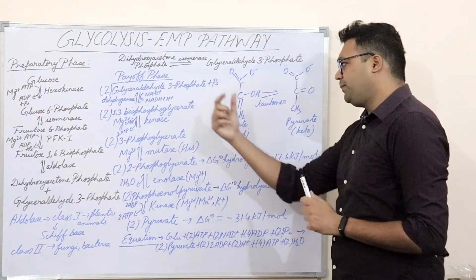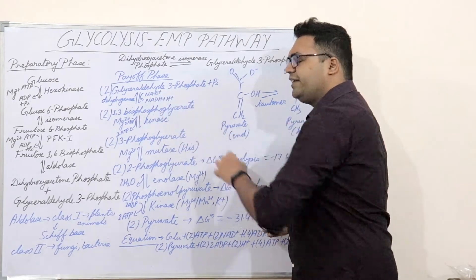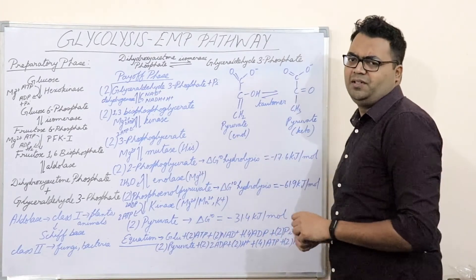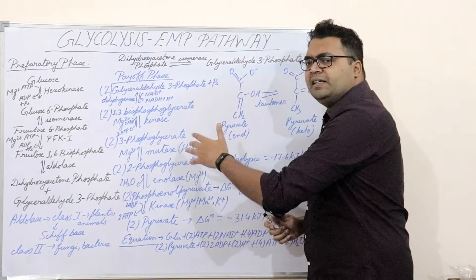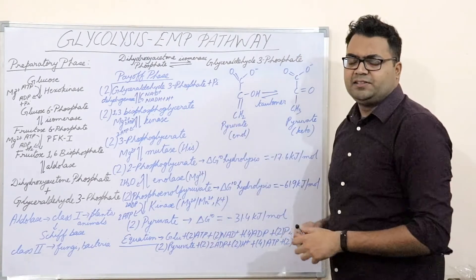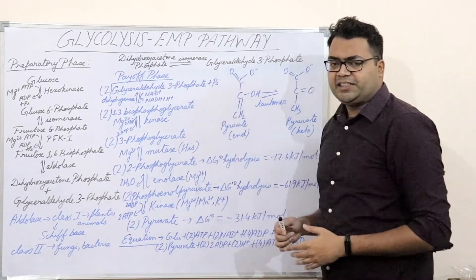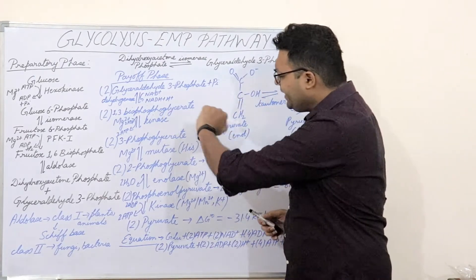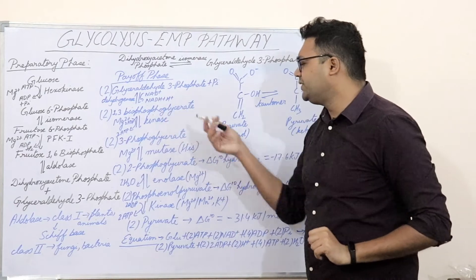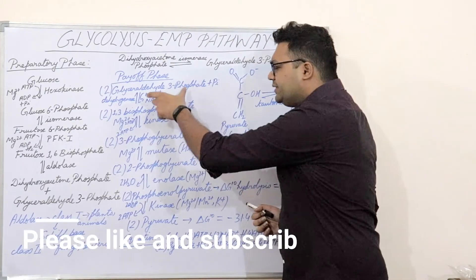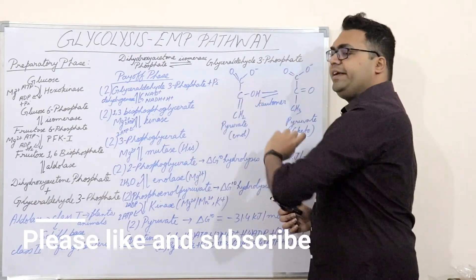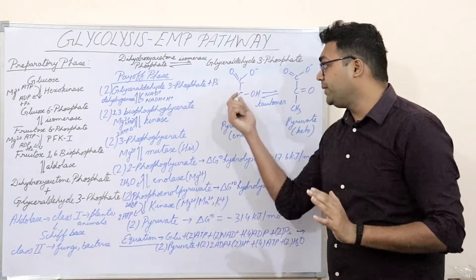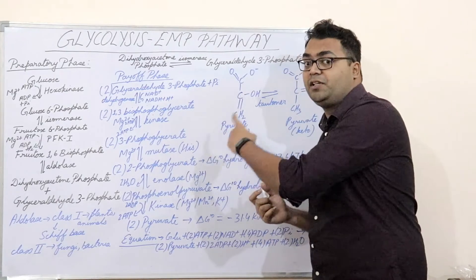An important question arises here: the concentration of NAD+ in the cytoplasm is less than 10⁻⁵ moles, so how does it get replenished? I will be talking about that in my next video when I discuss the regulation of glycolysis in depth.